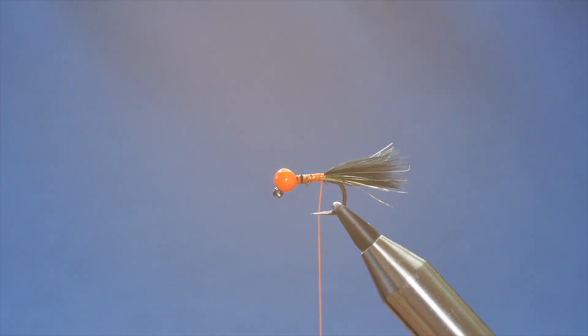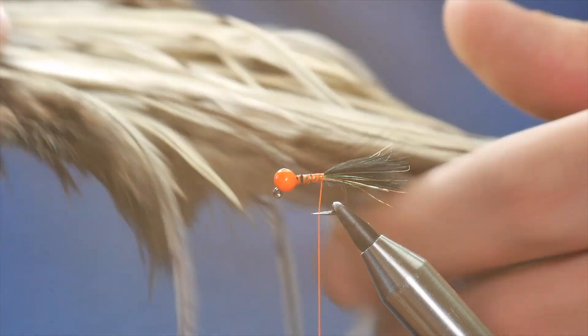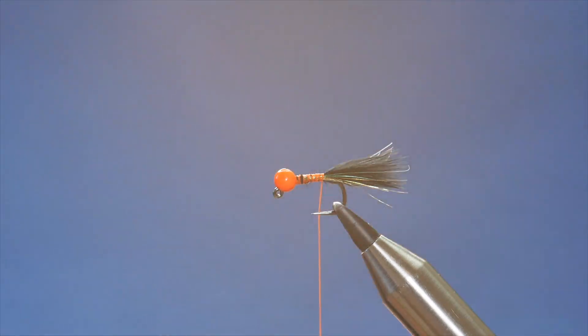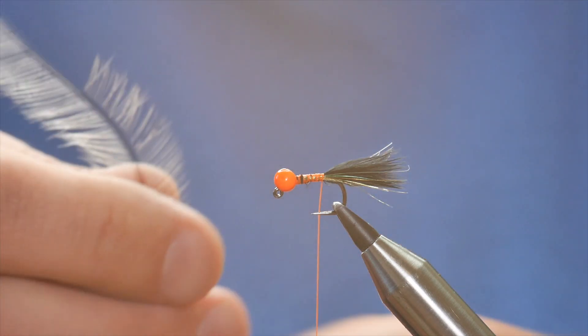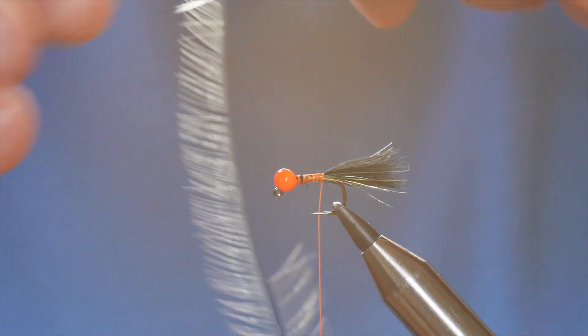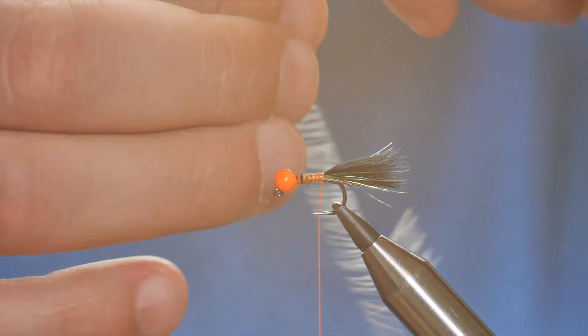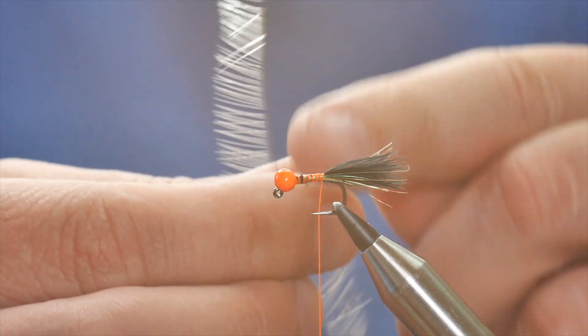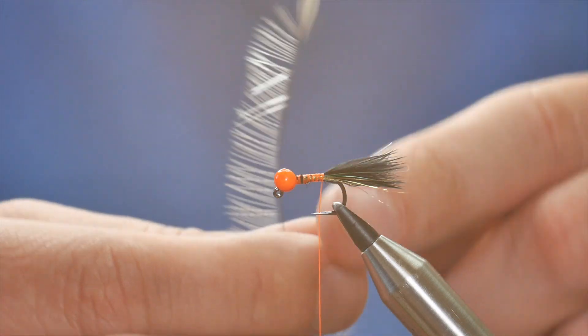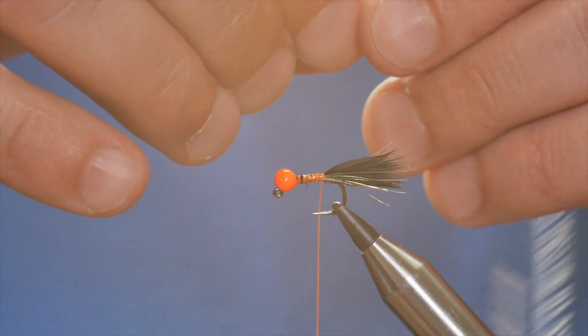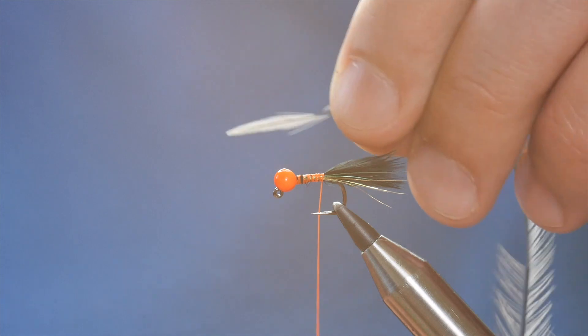Next thing then, is I'm going to add a hackle to this fly. Now, I've used a grizzle cape here and I've already taken a feather off. There's a good reason I've pre-selected the feather, because I've already done a bit of work before I started the video, just to save time. So all I've done is I've taken the feather, opened it up with my fingers, and then you'll notice I have stripped out one side, because I don't want the palmer to be too heavy.